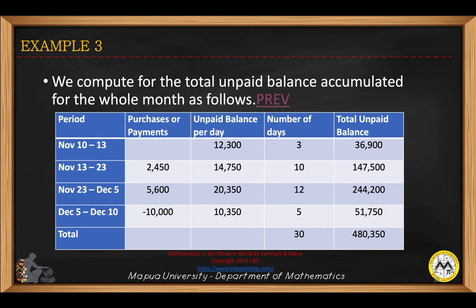We compute for the total unpaid balance accumulated for the whole month as follows. The previous balance is $12,300. There is a purchase made on November 13. The total number of days from November 10 to November 13 will be 3, multiplied by $12,300, giving $36,900 in three days.